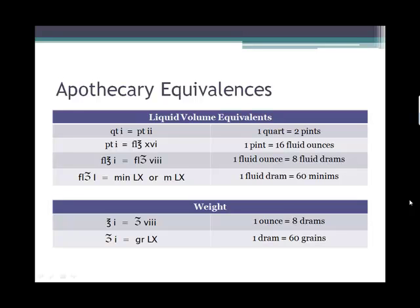Equivalences within the apothecary system: one quart equals two pints, one pint is the same as 16 fluid ounces, one fluid ounce, eight fluid drams, one fluid dram is 60 minims. And then in terms of weight equivalences, ounces and drams have the same kind of relationship in the fluid and liquid volume and also in the weight. And then one dram is 60 grains.